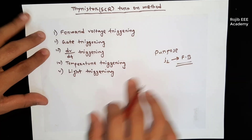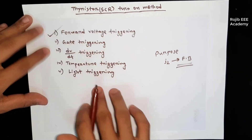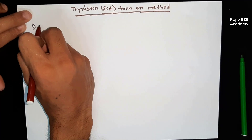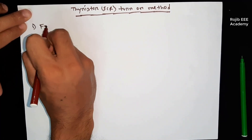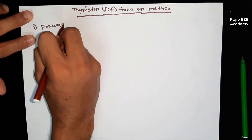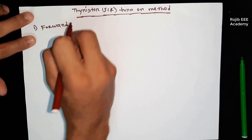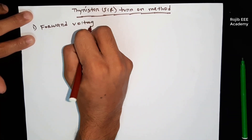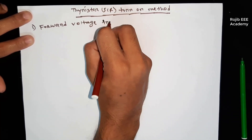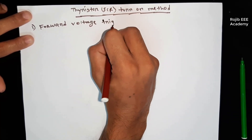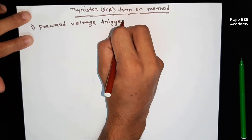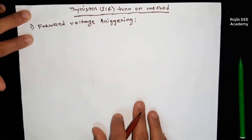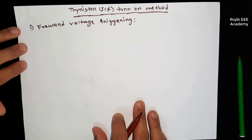The first turn-on method is forward voltage. The second step is also related to forward voltage.